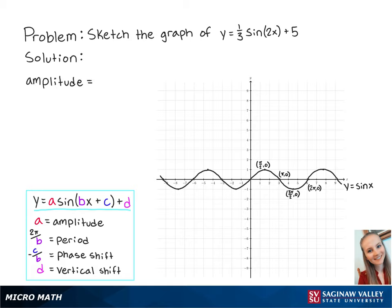For this problem, the amplitude is equal to 1/3, the period is equal to 2π over 2, which equals π, and the vertical shift is up 5.